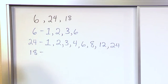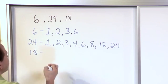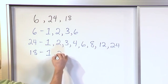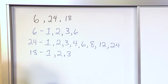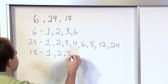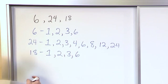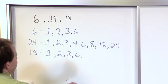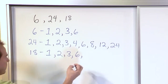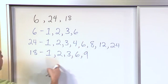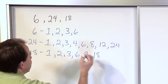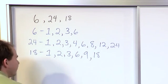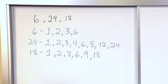Now let's look at the number 18. The number 1 is a factor. 2 is a factor because 2 times 9 is 18. 3 is a factor because 3 times 6 is 18. 4 and 5 are not factors because they don't go in evenly. 6 is a factor because 6 times 3 is 18. 7 and 8 you can skip because they don't go in. 9 is a factor because 9 times 2 is 18. Then you keep going and the last one you find is the number 18 itself. So all we've done is write all the factors of all the numbers.